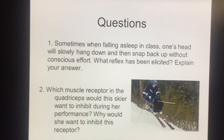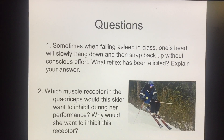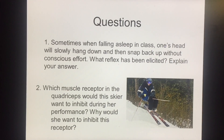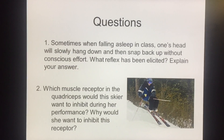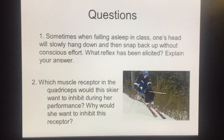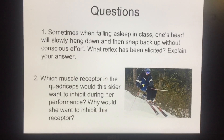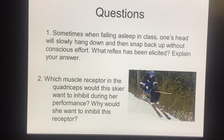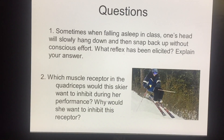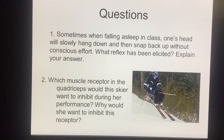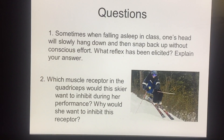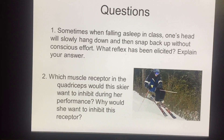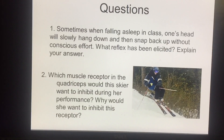I ended the last class with this question: sometimes when falling asleep in class, one's head will slowly hang down and then snap back up without conscious effort — what reflex has been elicited? In this case, it's the stretch reflex. When your head bobs down while you're falling asleep, you're stretching the muscles on the back of your neck. That activates the stretch reflex, which sends excitation to the spinal cord and the motor neuron controlling that muscle, causing activation of the neck extensor muscle and snapping your neck back up.